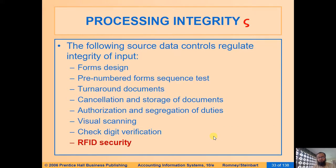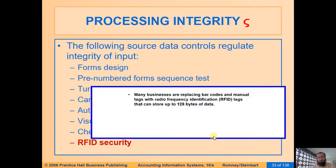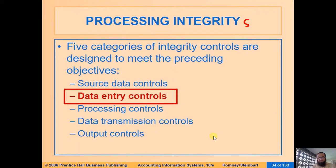Apart from barcodes, we can also use RFID chips, which are a more sophisticated control. Barcodes require scanning at a very specific direct angle, whereas RFID scanning works even if the chip is attached to an object at a distance — no direct line-of-sight scanner is needed. The RFID chip simply signals that a particular commodity exists within the RFID frequency range. These were the source data controls, and in the next video we shall look at data entry controls.